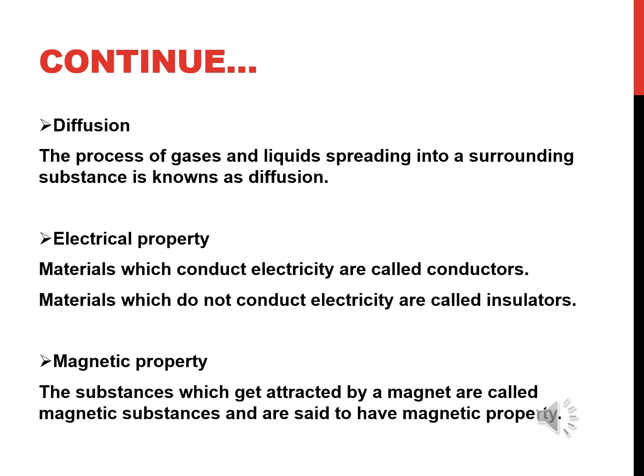Magnetic properties: Substances which are attracted by a magnet are called magnetic substances and are said to have magnetic properties. Magnets attract iron and steel but do not attract other metals like aluminum and copper. Materials that have magnetic properties are used in generators and motors — examples include iron, cobalt, nickel, etc.